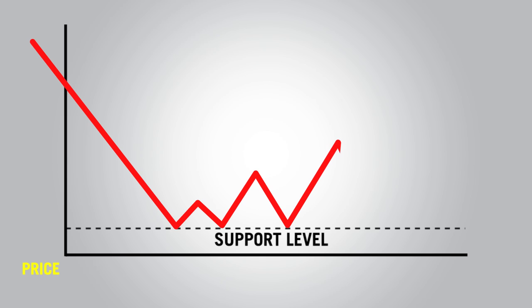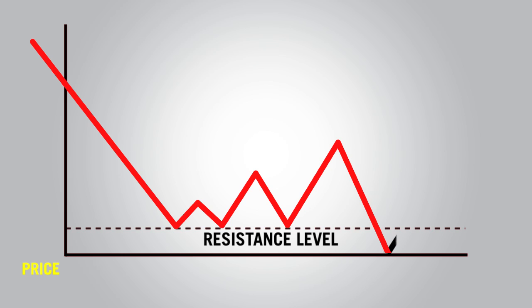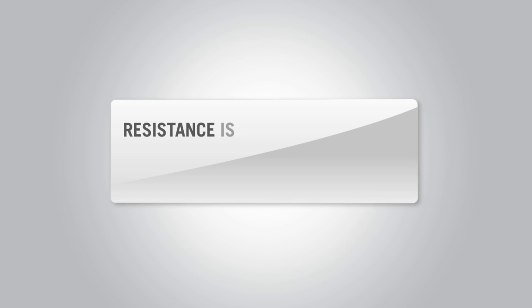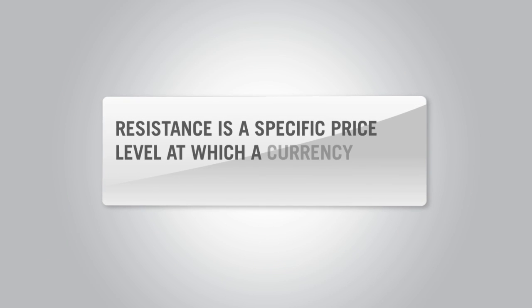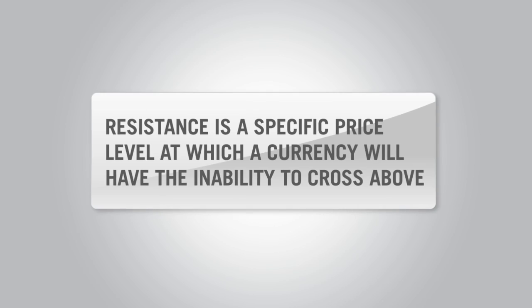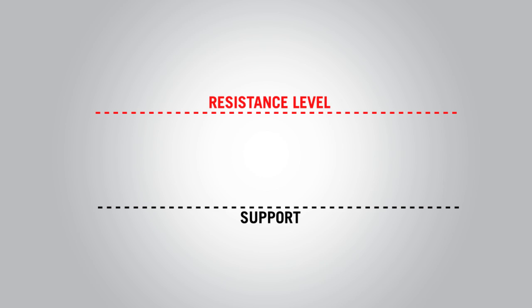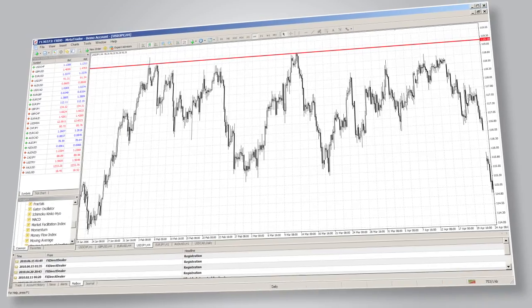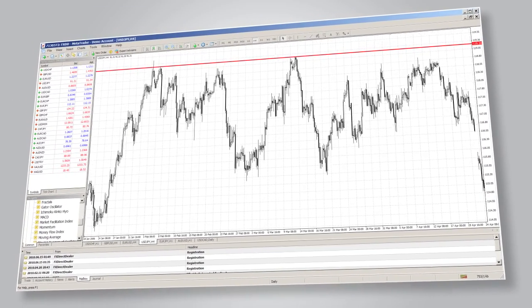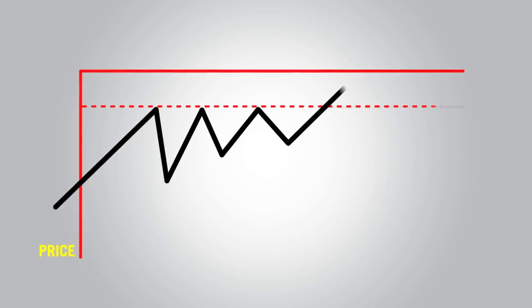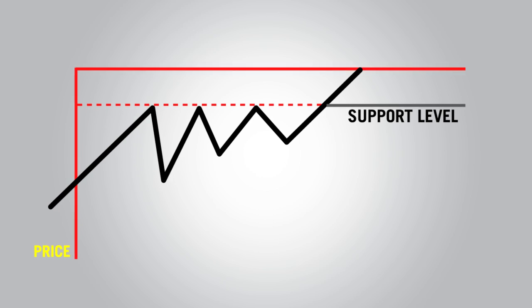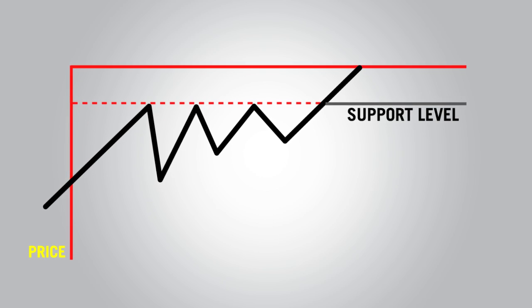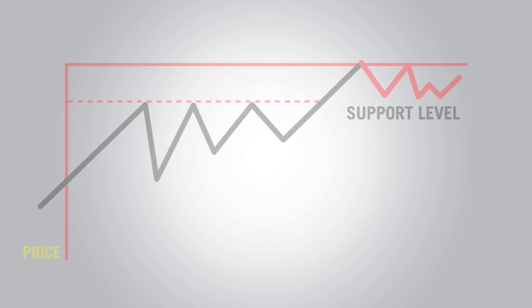Normally when support is broken, the old support level becomes new resistance for further price movement. Resistance is a specific price level at which a currency will have the inability to cross above. Resistance is formed in uptrending markets where a ceiling is established. The price level will either bounce off the ceiling and knock itself down, or break up through the ceiling and continue upward. When resistance is broken, the old resistance level becomes new support.